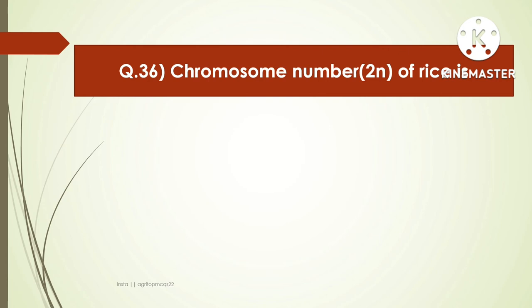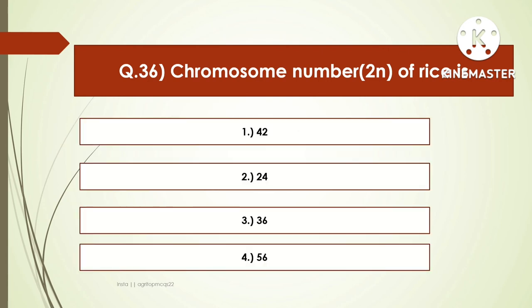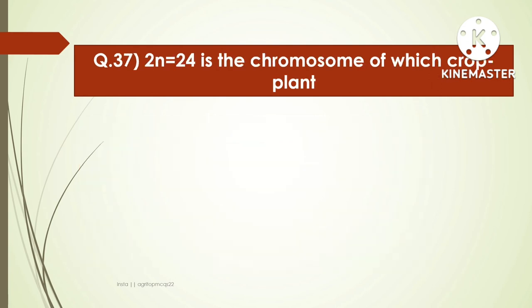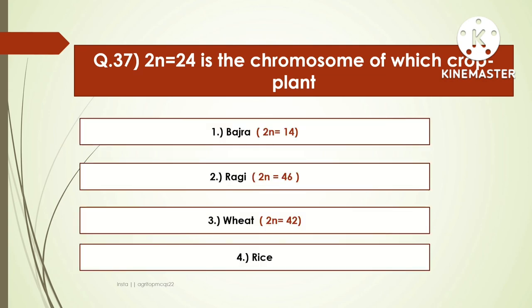The next question is: the chromosome number 2N of rice is — options are 42, 24, 36, or 56. The right answer is 24. The chromosome number of rice is 2N = 24. The next question: 2N = 24 is the chromosome number of which crop? Options are Bajra, Ragi, Wheat, or Rice. The right answer is Rice. Additionally, the chromosome number of Bajra is 14, Ragi is 46, and Wheat is 42.